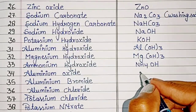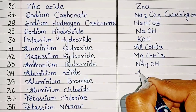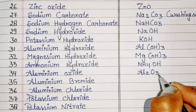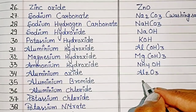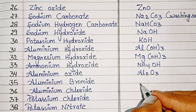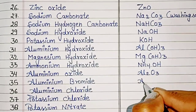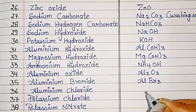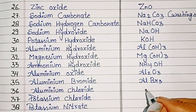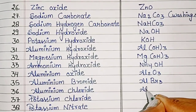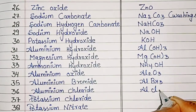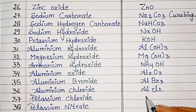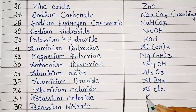Aluminium Oxide: Al2O3. Aluminium Bromide: AlBr3. Aluminium Chloride: AlCl2. Potassium Chloride: KCl.